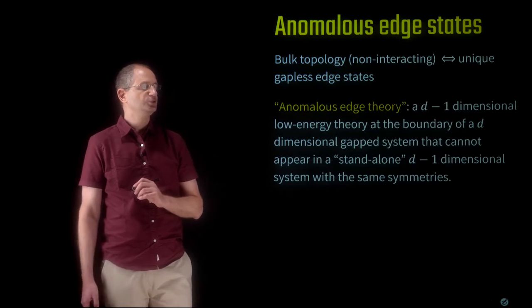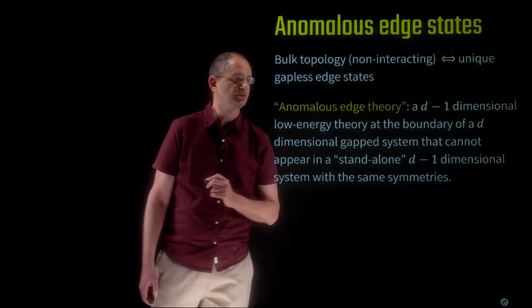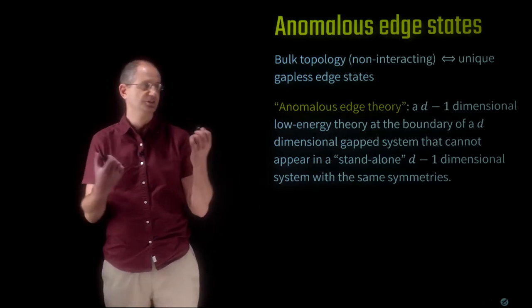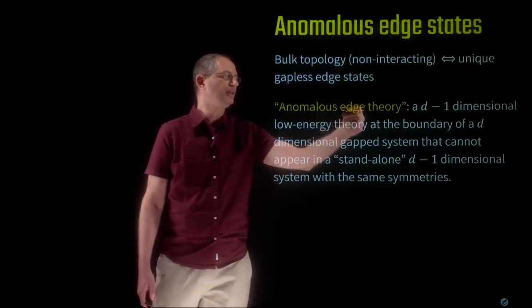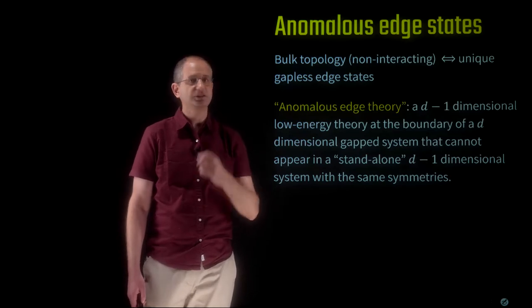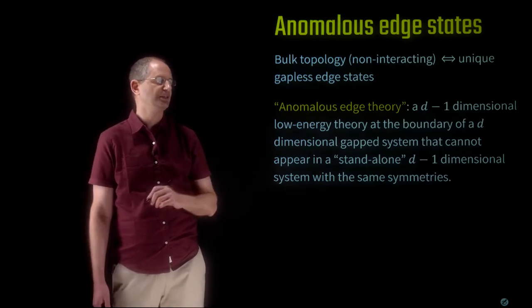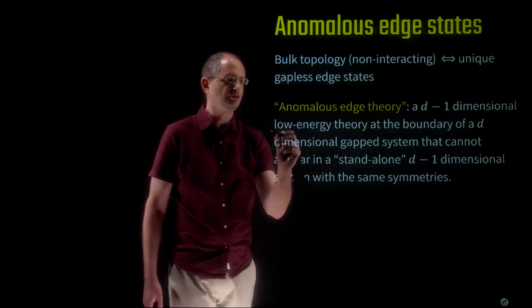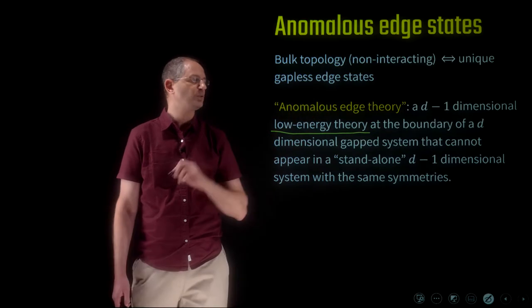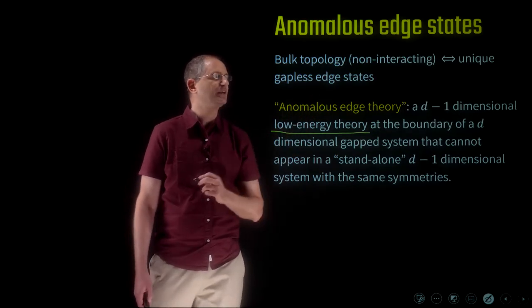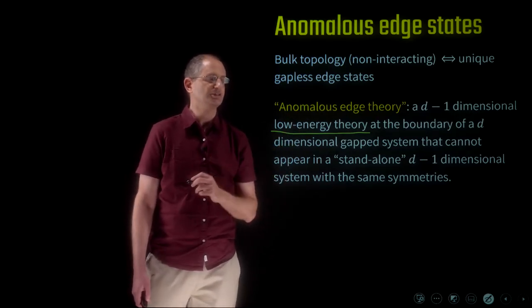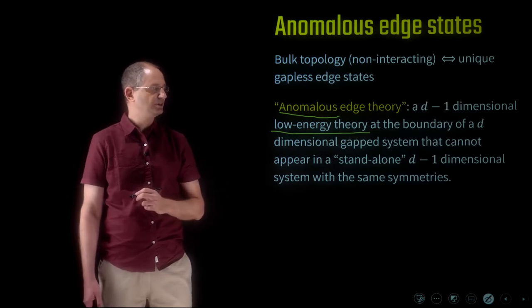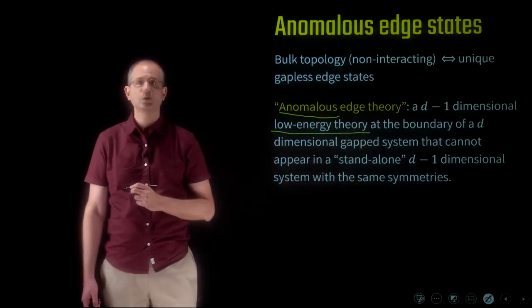We're going to introduce the notion of an anomalous edge theory. Suppose we have a gapped system in the bulk — some d-dimensional system with a bulk gap. The surface is a d-1 dimensional system. Even though the bulk is gapped, the boundary may be gapless. If the bulk is topological, the boundary is going to be gapless, characterized by some kind of low-energy theory of sub-gap states of the d-1 dimensional boundary. We say this d-1 dimensional theory is anomalous...